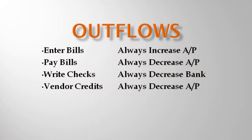To recap: Enter Bills always increases accounts payable — since payables are a liability account, it's increased with a credit. The offsetting debit is selected either by the accounts you select or the items mapped to accounts. Pay Bills will always decrease the accounts payable account and decrease the bank account. Write Checks will always decrease the bank account, and you select where the offsetting debits go with accounts or items. Vendor credits will always decrease accounts payable, and you select where the offsetting credits go.